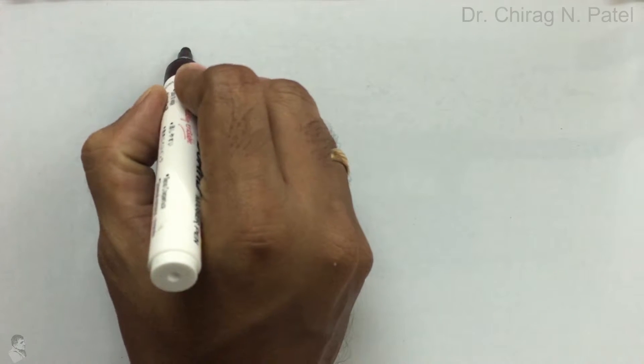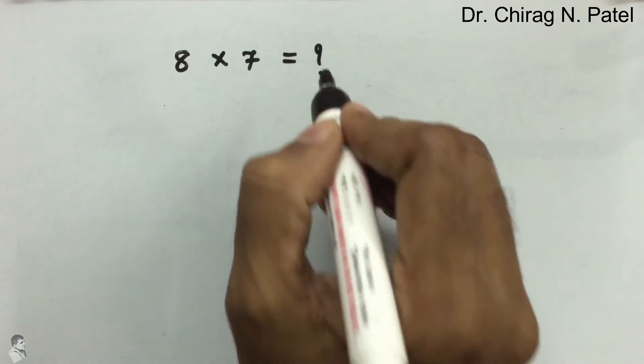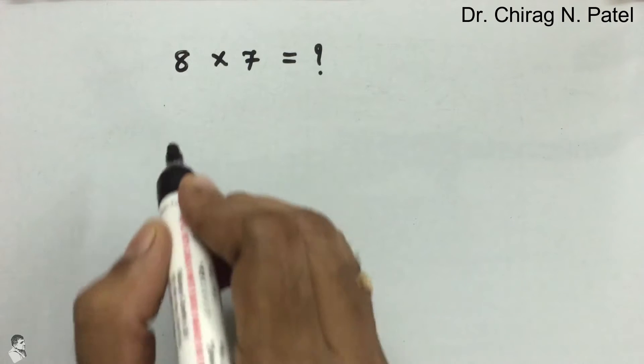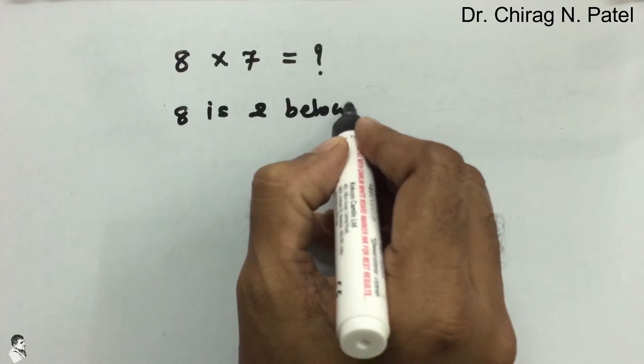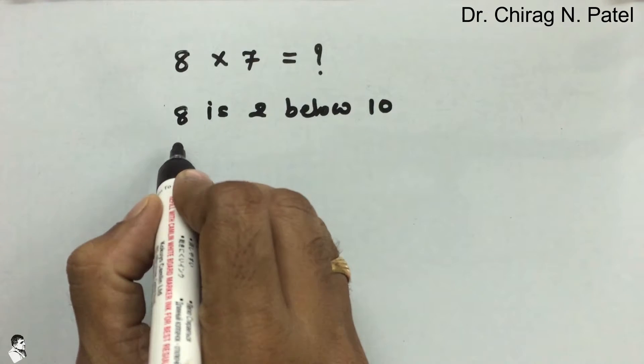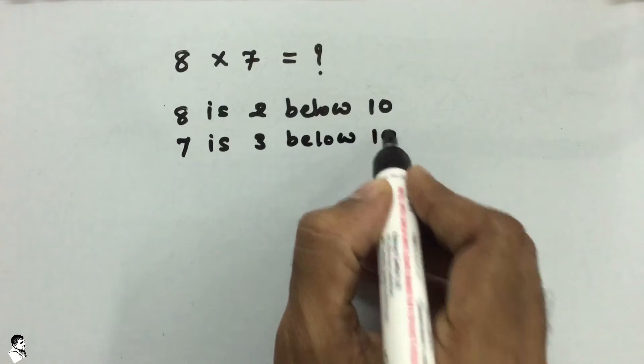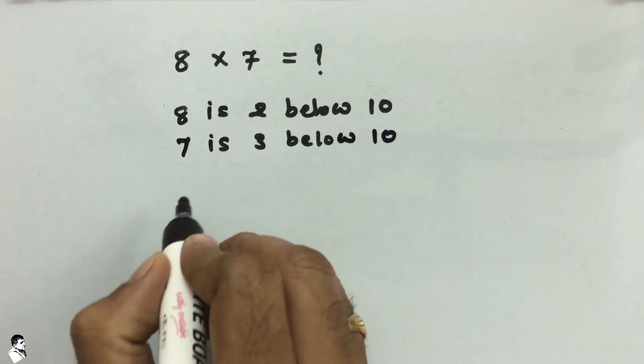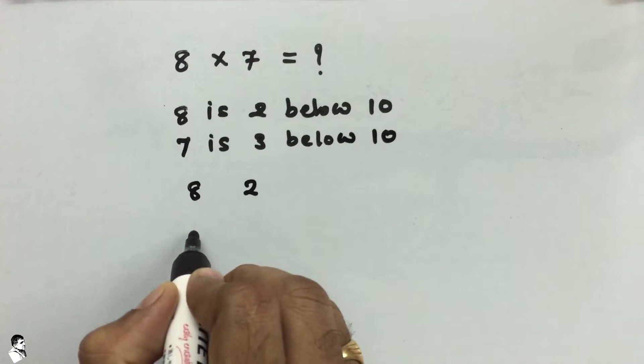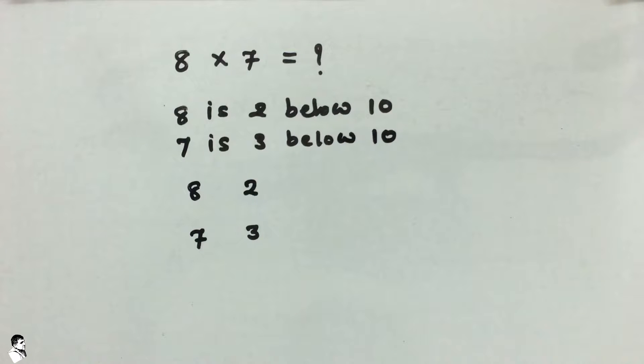Let's take two numbers 8 and 7 and we want to multiply them and find an answer. If we see that 8 is 2 below 10 and 7 is 3 below 10, we can write this down in proper notation. So 8 that is 2 below 10 and 7 that is 3 below 10.